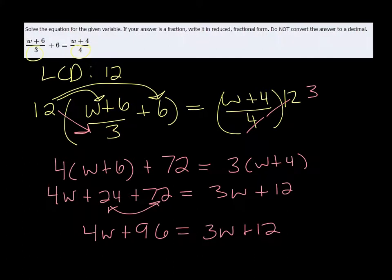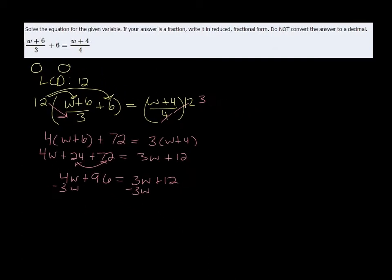And from here we want to get all of our variables together on the same side. So I'm going to do that by subtracting 3W on both sides.